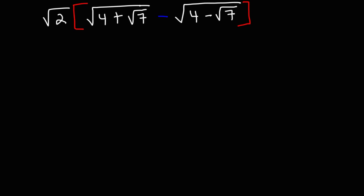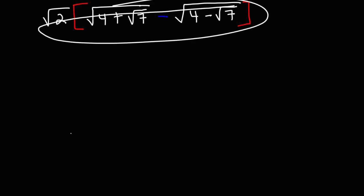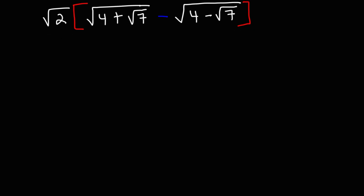Consider the expression on the board. How can we simplify this expression? What is the square root of 2 times the square root of 4 plus the square root of 7, minus the square root of 4 minus the square root of 7? It turns out that this whole problem simplifies into an integer, but let's see how we could simplify it.